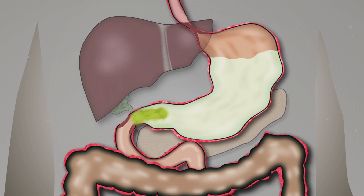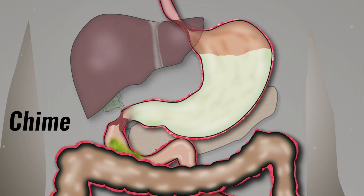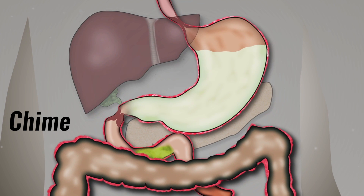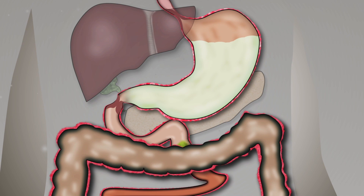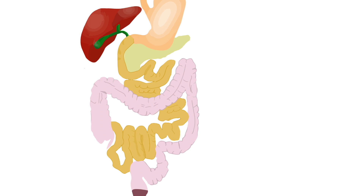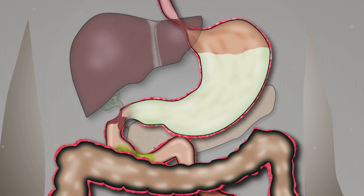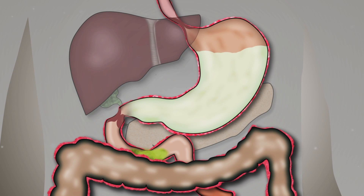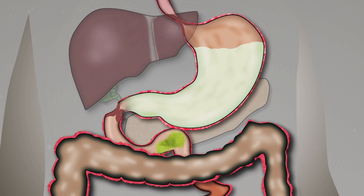Food leaving the stomach, now known as chyme, enters the small intestine. The small intestine consists of three regions: the duodenum, the jejunum, and the ileum. It is the small intestine where the majority of the digestive process takes place.